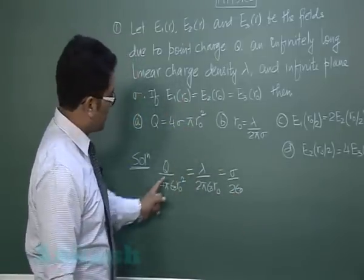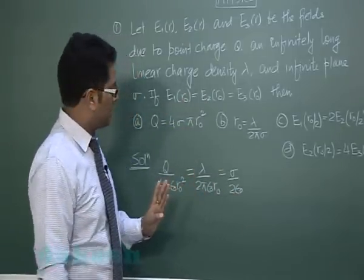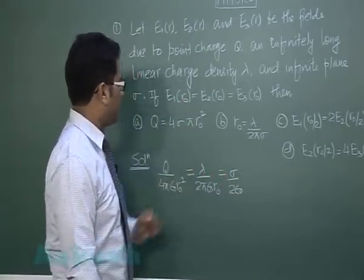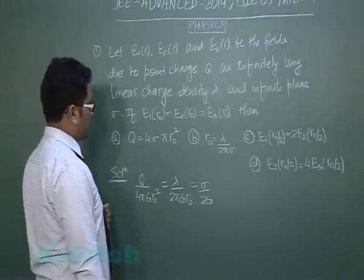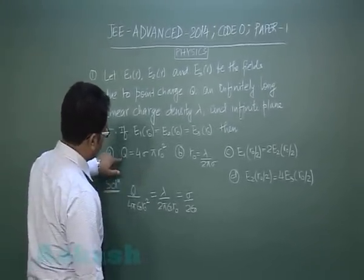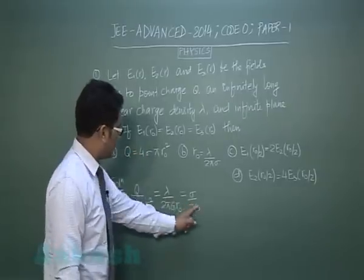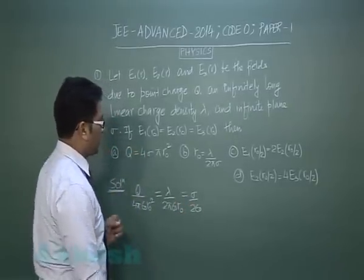Option A relates q with σ. Using the first and third relations, it comes out to be incorrect.